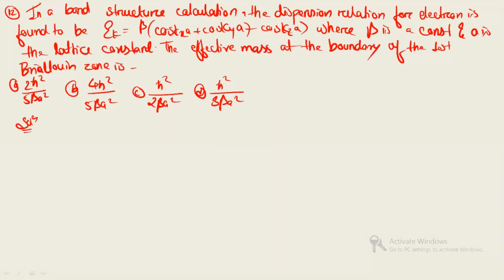Next is a band structure calculation. The dispersion relation for an electron is given; beta is a constant and a is the lattice constant. You need to calculate the effective mass m* at the boundary of the first Brillouin zone. The formula is m* equals ℏ² divided by (d²ε_k / dk²), evaluated at the first Brillouin zone boundary at k equals ±π/a for kx, ky, kz.